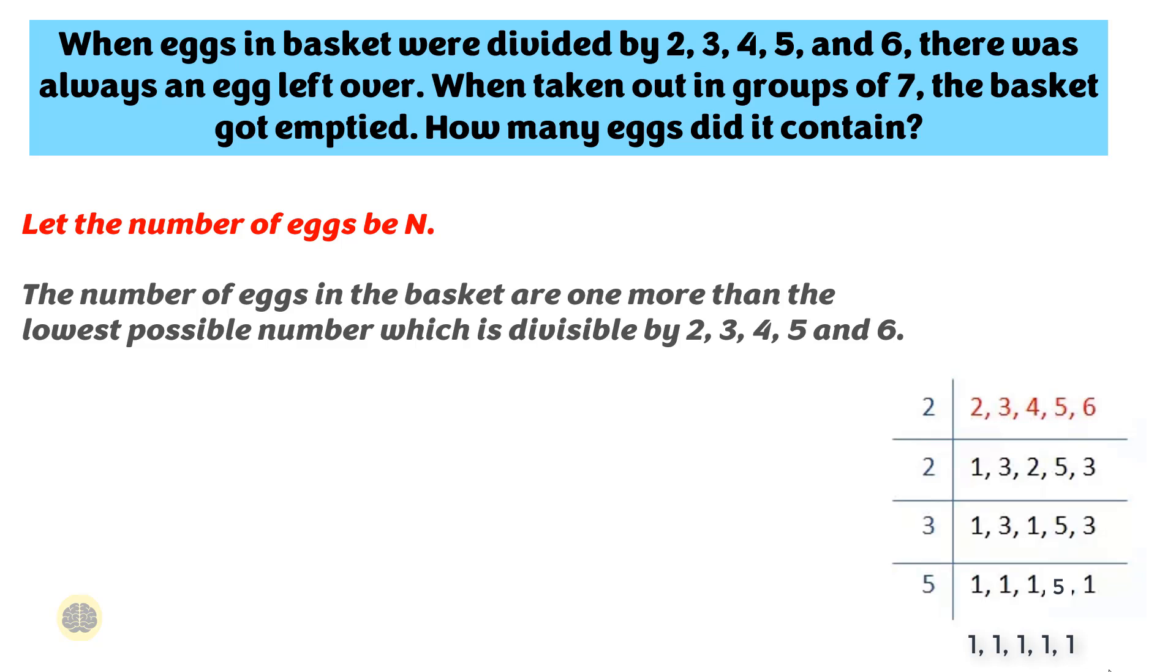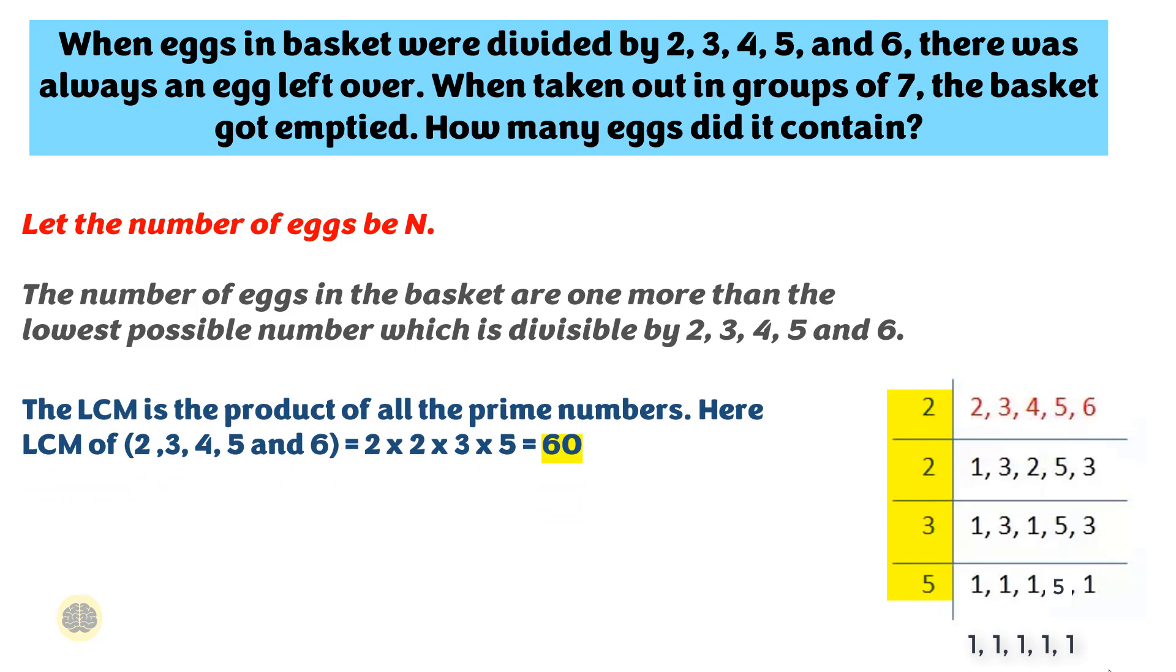The LCM is the product of all the prime numbers. Here LCM of 2, 3, 4, 5 and 6 equals 2 times 2 times 3 times 5 which is equal to 60. Now get back to the problem.